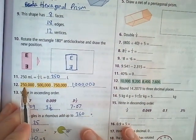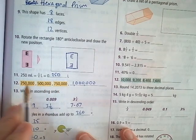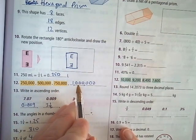Number 12. 250,000, 500,000, 750,000. It's going up by 250,000 each time. So the next one is 1 million.